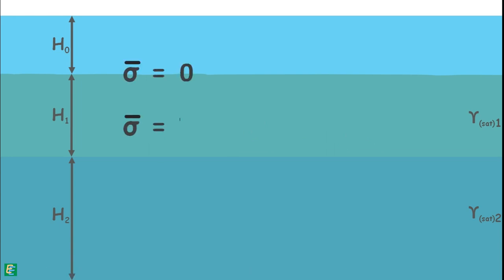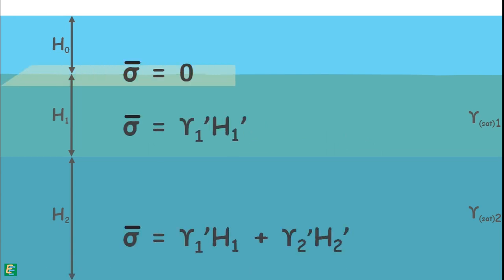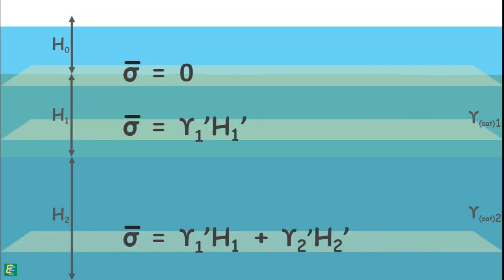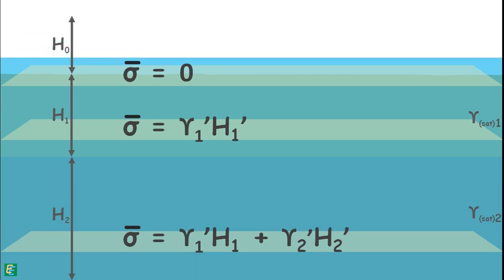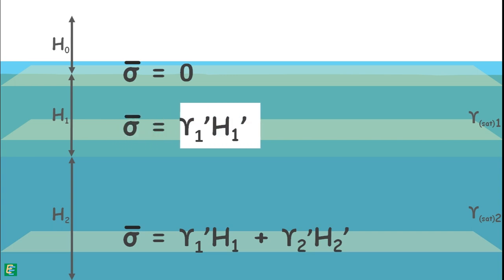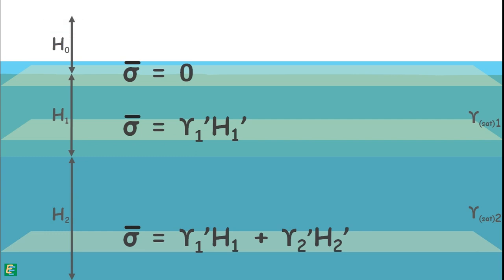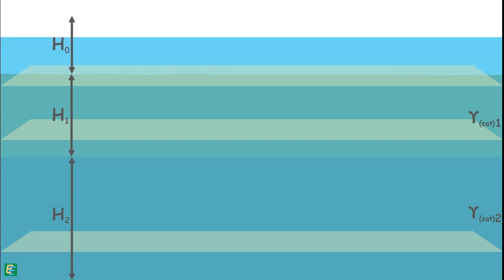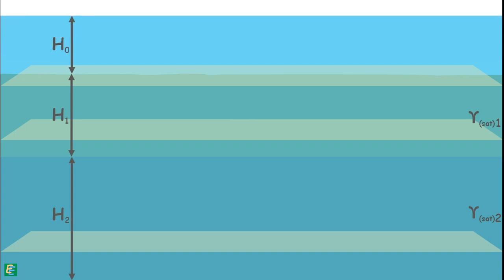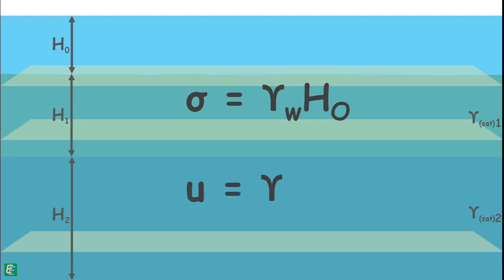With all our calculations, we observe that a change in the water level above the ground has no effect on effective stress — it remains unchanged. The height of the water above the surface does not appear in the equation, because an increased height of water above ground level causes both total stress and pore water pressure to increase by the same amount.